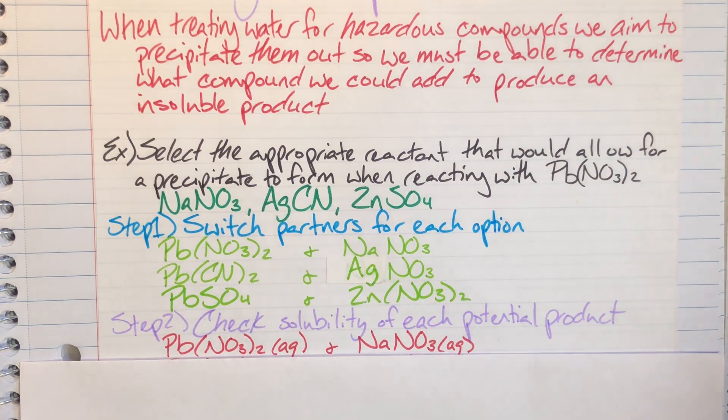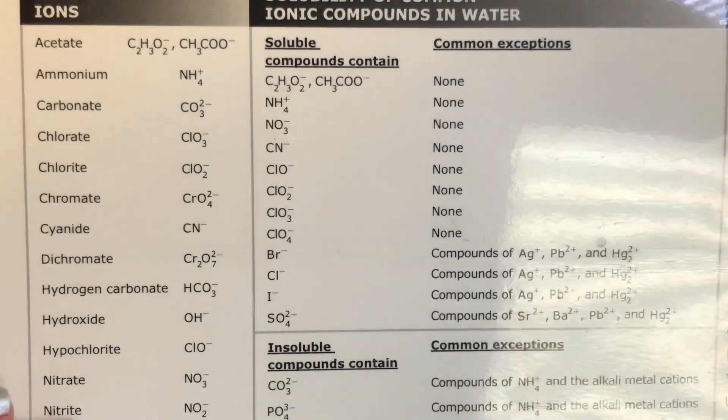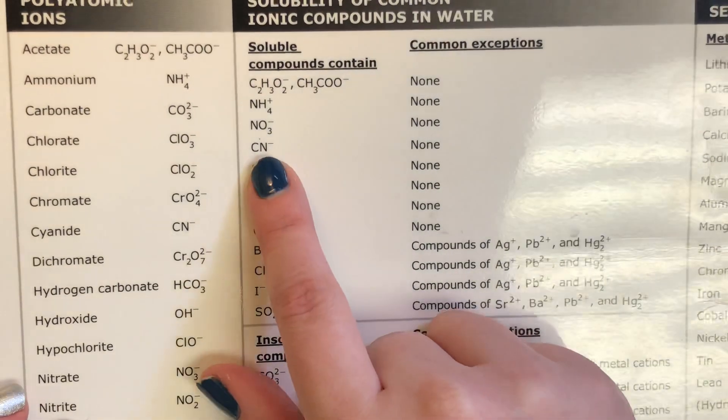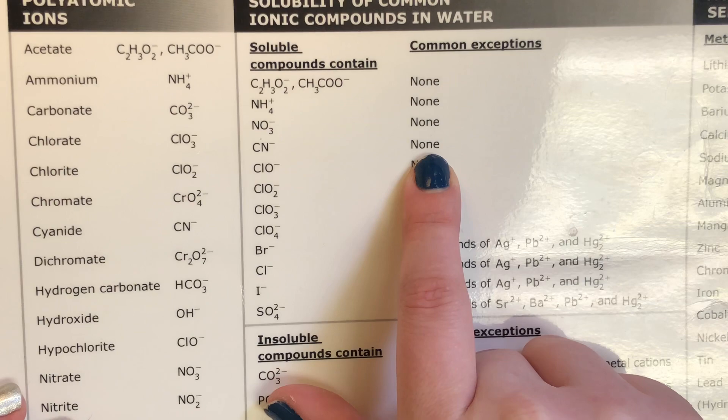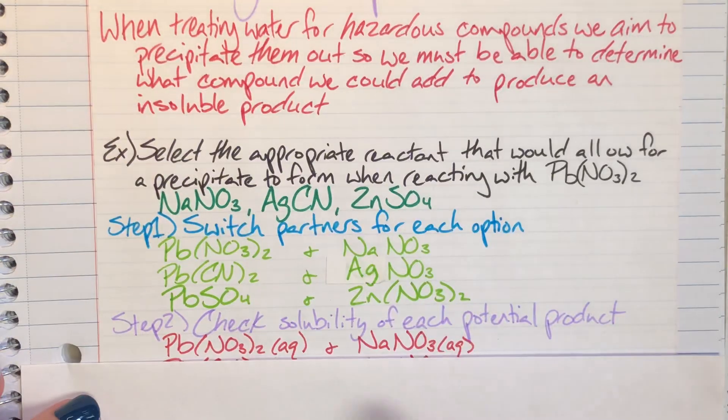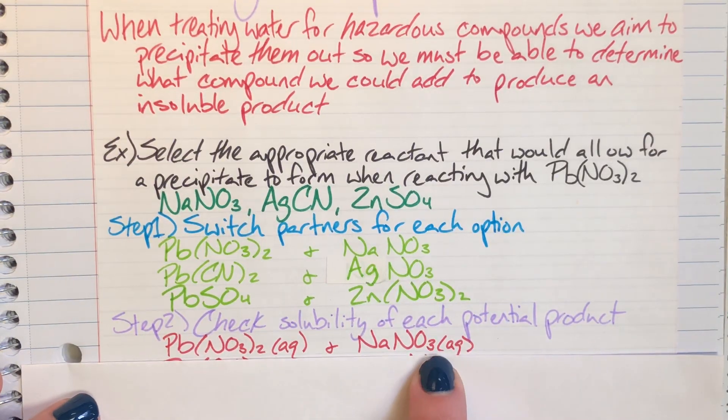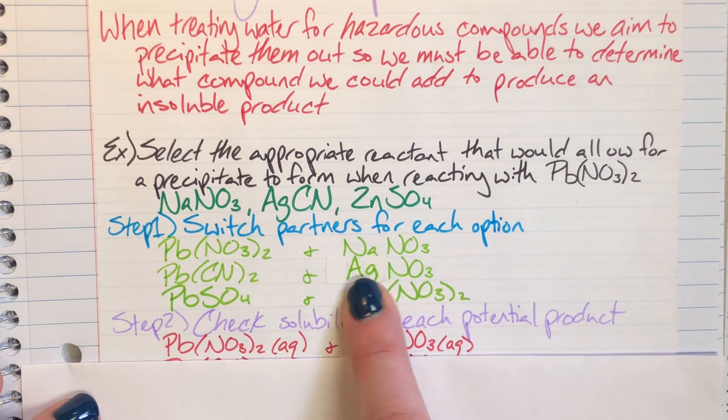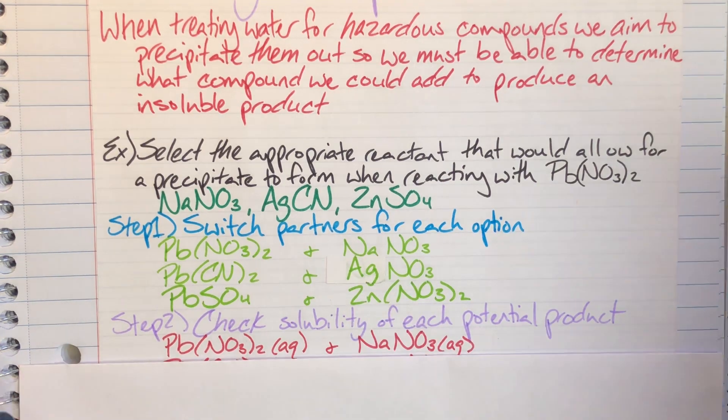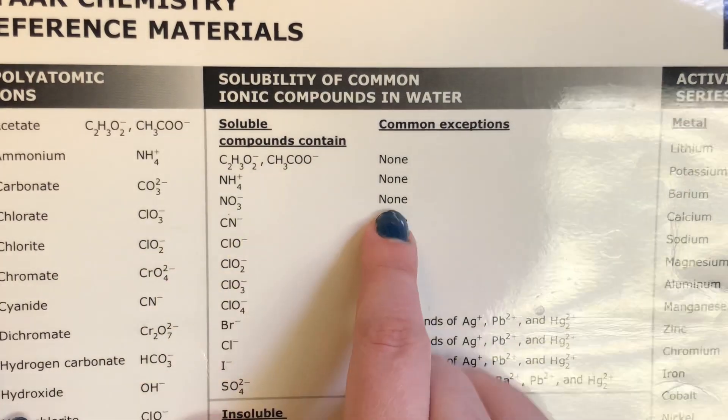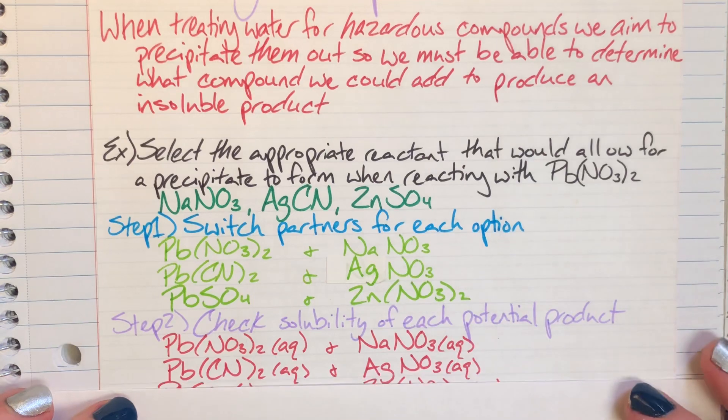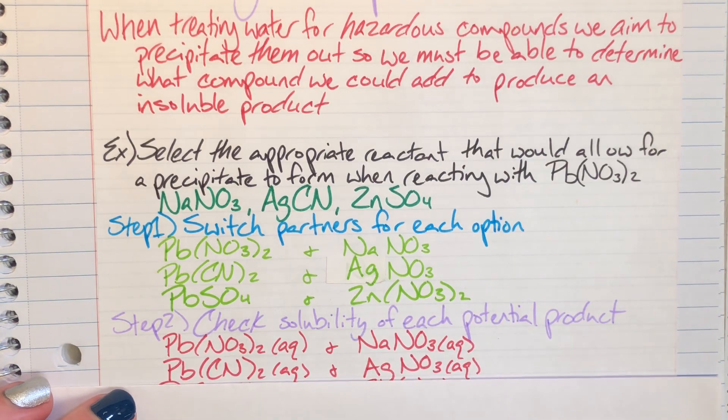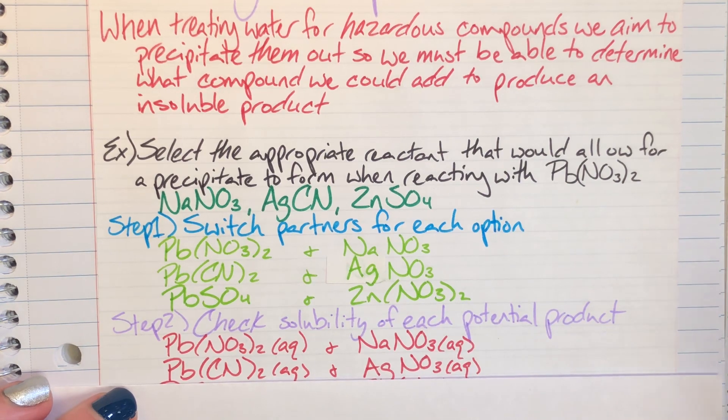Next I have lead(II) cyanide, so I can check the solubility of cyanide. When I look at cyanide, I see that cyanides are always soluble, so that lead(II) cyanide is going to be soluble. But maybe this silver nitrate will be insoluble, so then I'll look at nitrate and I'll see nitrates are still always soluble. So that means that both compounds are soluble again, so not the thing that I wanted.